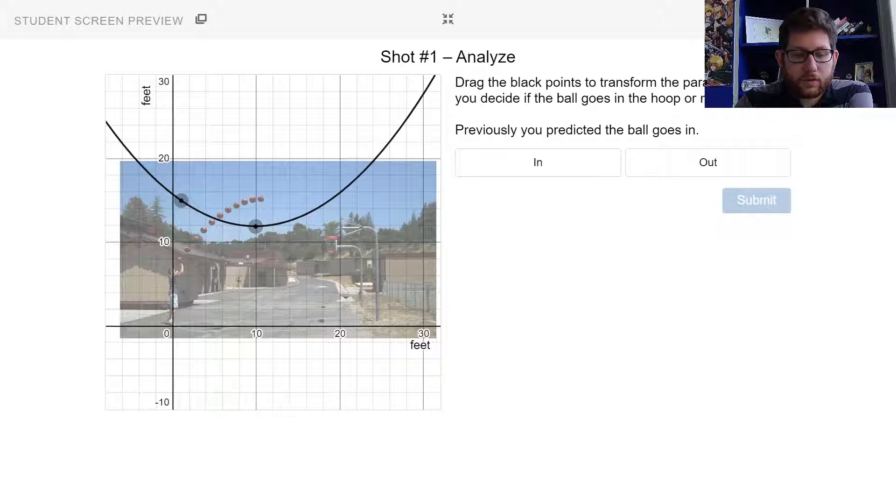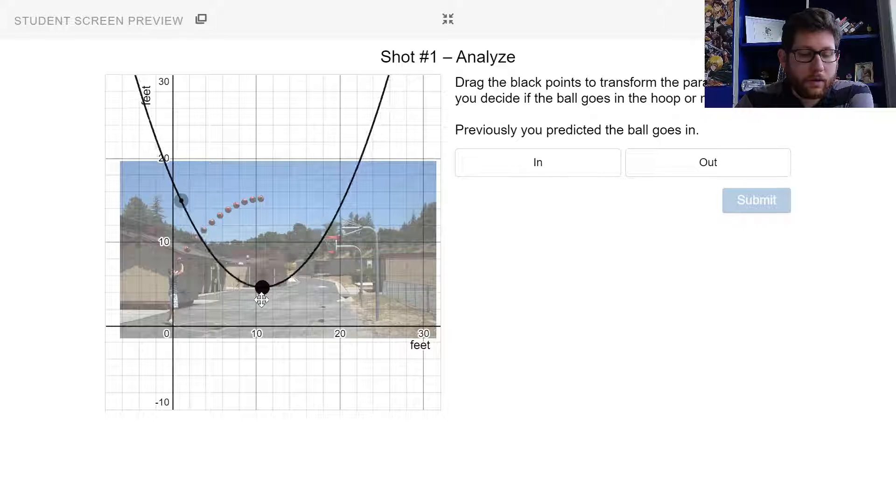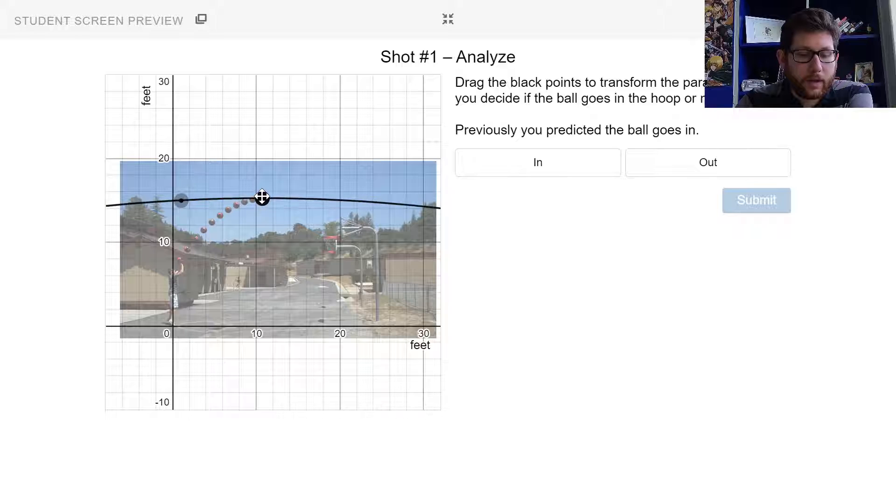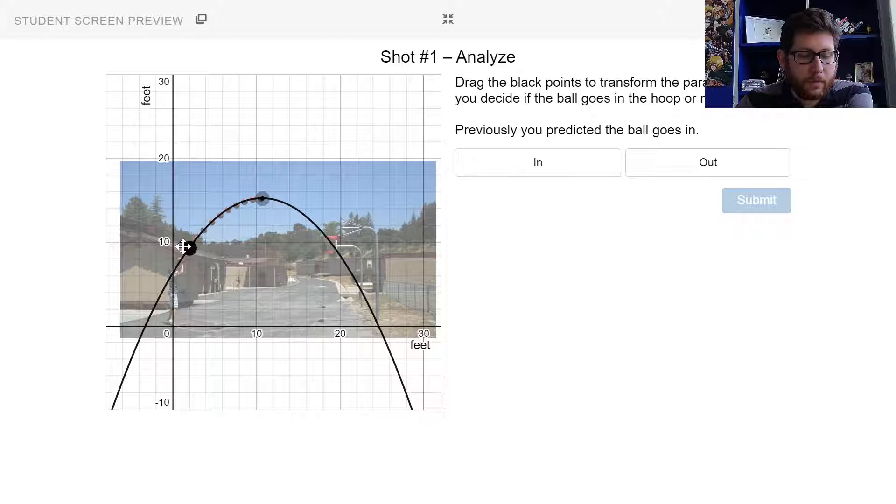And then what you're going to do once you're done, so I'll do this first one, is you're going to analyze it instead of trying to guess by looking at it. You're going to guess by using your parabolas. So take a look what we're going to do using a quadratic function here. I'm going to put one of the points on the basketball maybe up here, and then maybe one of them either where he's holding it or maybe where he shot it.